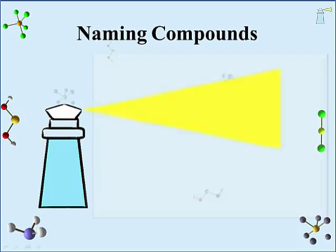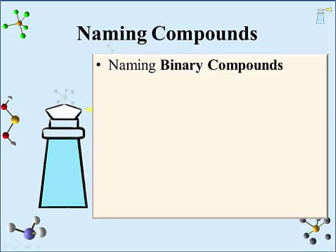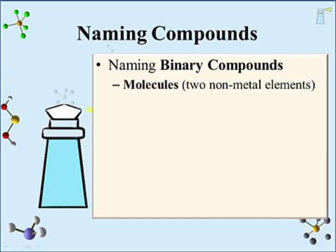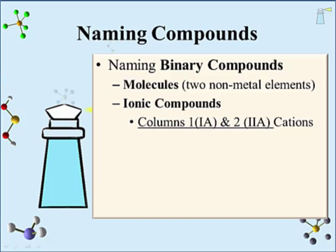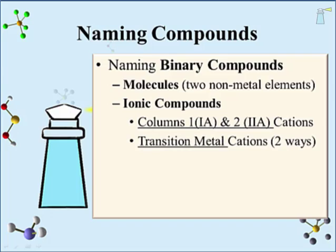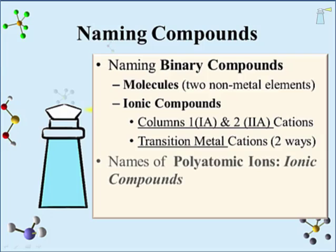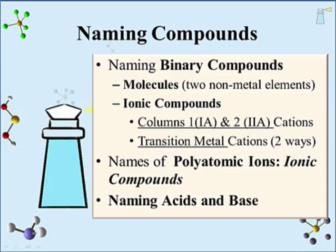Our study begins with the naming of binary compounds. Binary compounds contain just two elements. One type of binary compound is the molecule — they contain two types of non-metal elements. Another type is ionic compounds. There is some variation in the naming of ionic compounds: those involving columns 1 and 2 cations, and those with cations from the transition metal or heavy main group elements. There are two ways of naming these cations. And then there are polyatomic ions, and finally acids and bases.